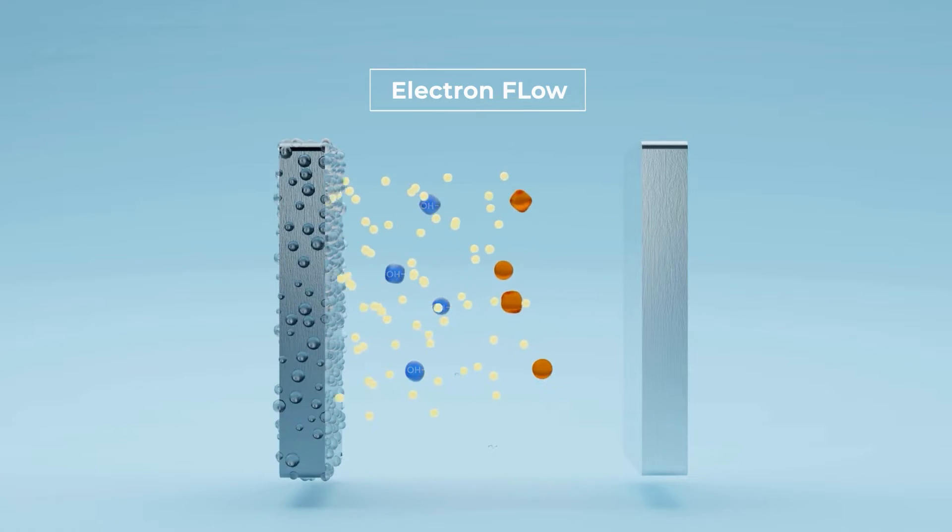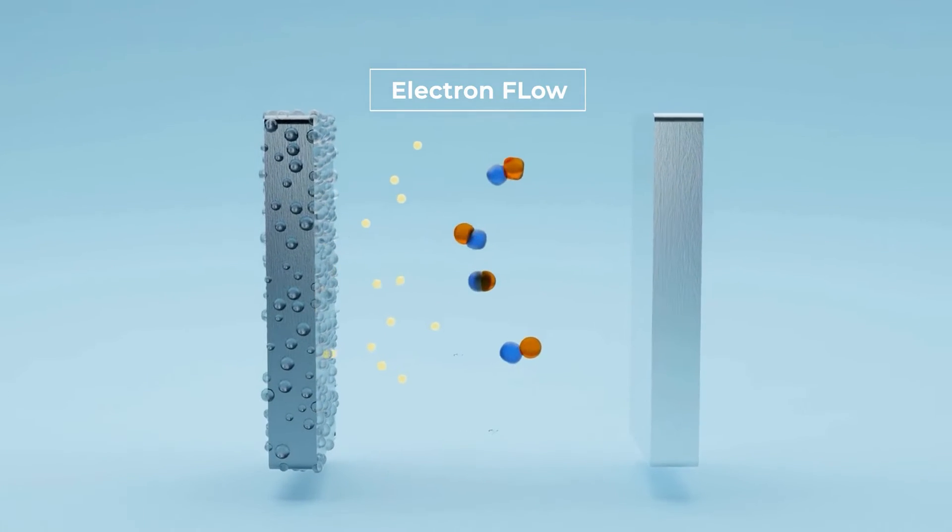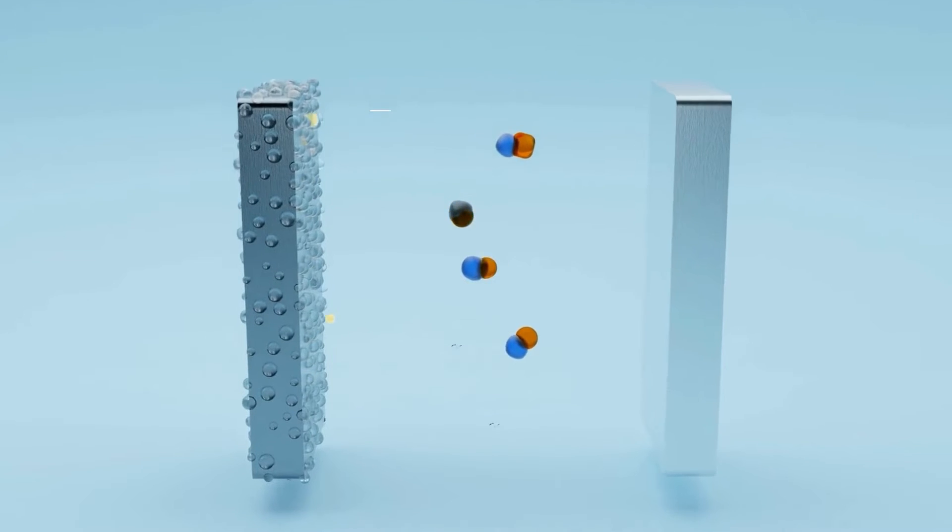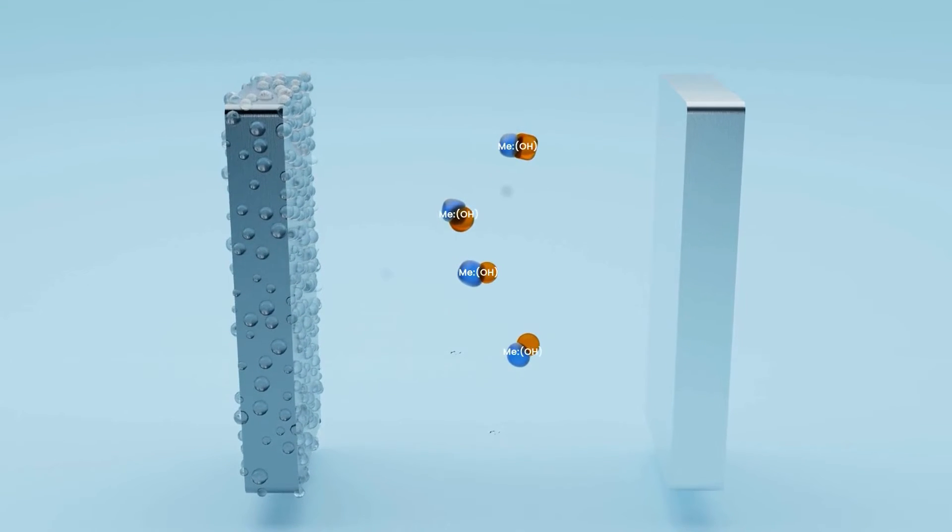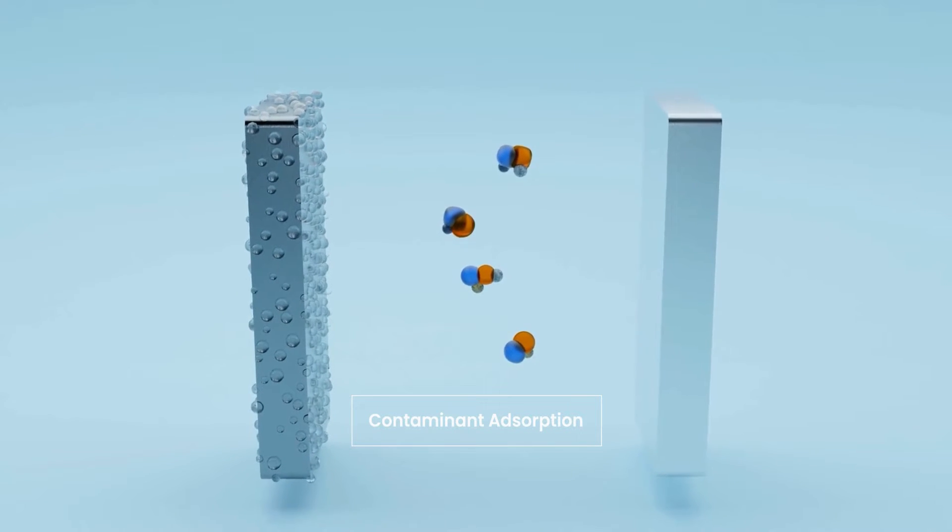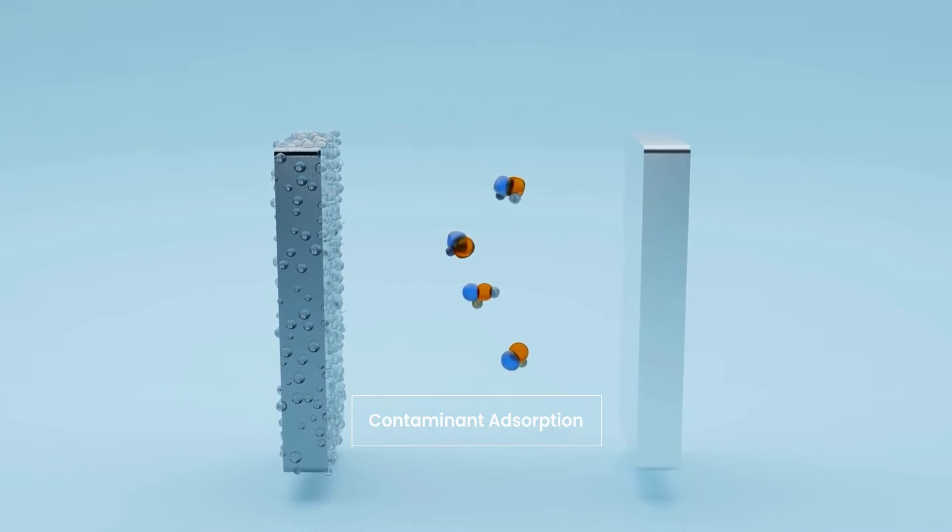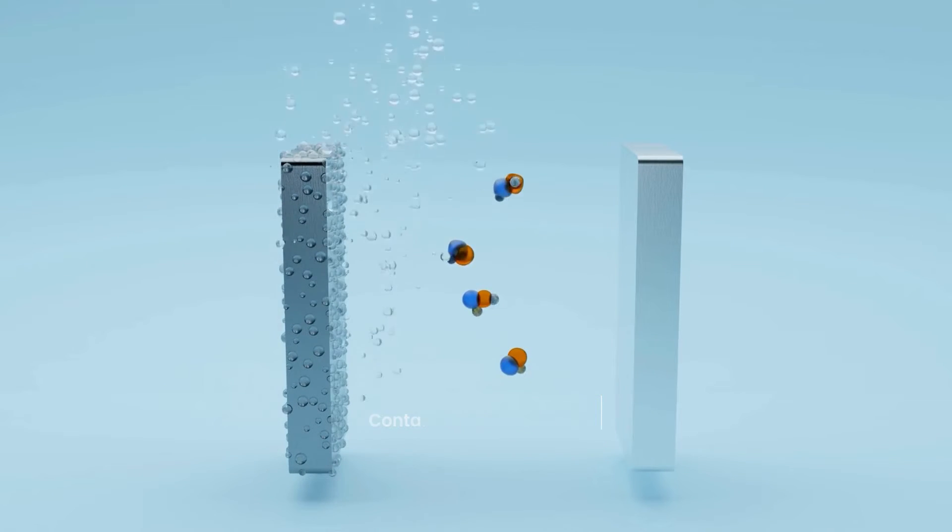As the electrons flow freely from the anode to the cathode, metal ions react with hydroxide ions. This beautiful dance results in the formation of metal hydroxides, which acts like a magnet, attracting and encapsulating impurities present in the water, forming flocks.